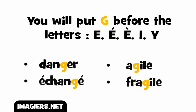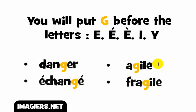Let's see a few examples. The first one: G followed by E-R, giving the sound 'é' — for example, the word 'danger'. Same J sound here. And next, G followed by I — for example in the word 'agile'.